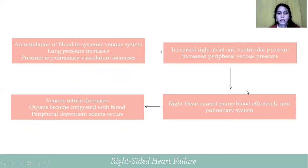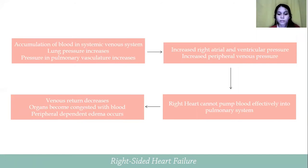In right-sided heart failure, there is an accumulation of blood in the systemic venous system. Increased lung pressure and increased pressure in the pulmonary vasculature occur. The increases in right atrial and ventricular pressure cause the right heart to pump ineffectively into the pulmonary system. As a result, venous return decreases and the organs become congested with blood, then peripheral dependent edema occurs.